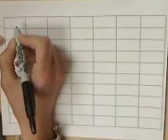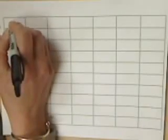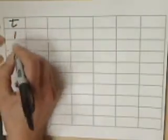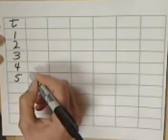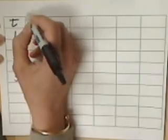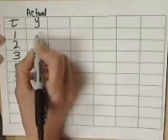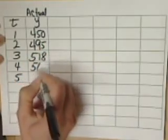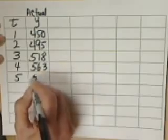Today I'm going to solve the same problem that we started out with and use three different smoothing methods for forecasting. We have a time series with five time periods in the past, and our actual values in the time series are 450, 495, 518, 563, and 584.